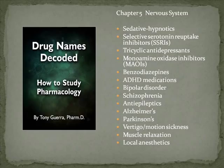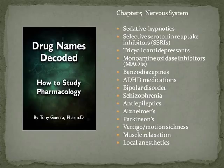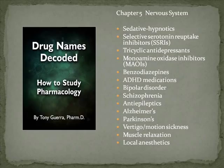The first group is the sedative hypnotics, then the selective serotonin reuptake inhibitors, the tricyclic antidepressants, the monoamine oxidase inhibitors or MAOIs, the benzodiazepines, the ADHD medications, the bipolar disorder meds, the schizophrenia medications, the antiepileptics, medications for Alzheimer's, Parkinson's, vertigo and motion sickness, muscle relaxation, and local anesthetics. One thing to mention: SSRI, MAOI, and ADHD are always pronounced out — you always say the letters. Unlike NSAID, where you say the letter N and then pronounce the word 'said,' these are initialisms.